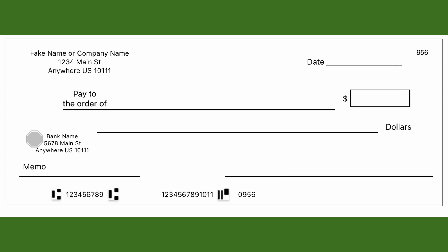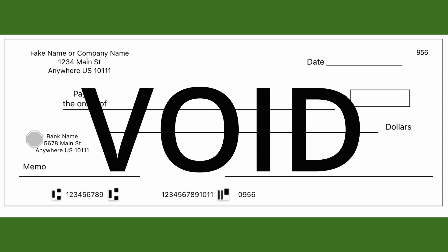If you need to write a void check, simply write 'VOID' over the middle portion of the check, making sure not to cover the numbers at the bottom.